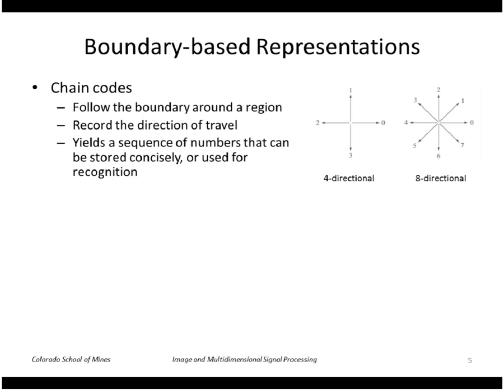Chain codes are a simple idea. Basically, you pick a starting point on the boundary and you follow the boundary around the border of that region, recording the direction of travel at each point. We could have the convention of only the four cardinal compass directions, or we could also include the diagonal directions as well—four directional or eight directional. Recording those numbers, we have a sequence of numbers that can be used to represent the shape of the border or for recognition.